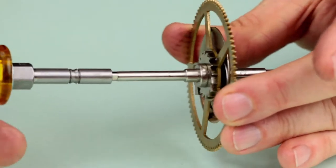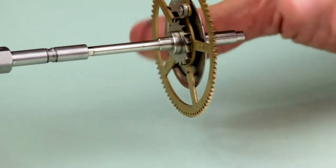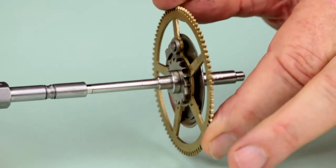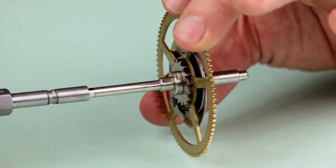Without some way to prevent it, the great wheel will spin freely on the winding arbor and will not transfer power from the mainspring to the wheel train. This is where the click comes in.